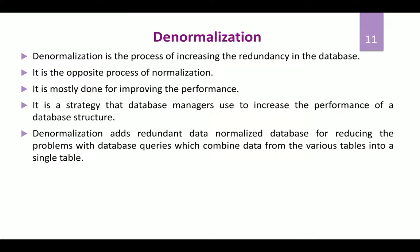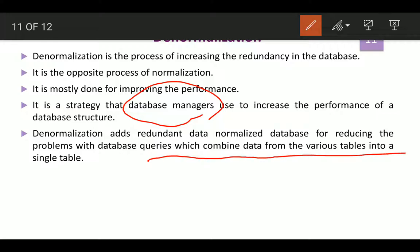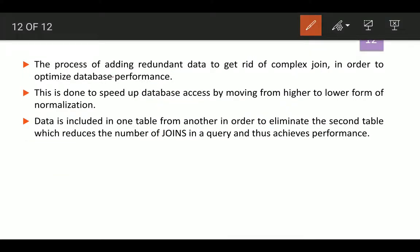The next topic is denormalization. It is the process of intentionally increasing redundancy in the database — the opposite of normalization. It is mostly done to improve performance. A database manager designs it so that database queries combining data from various tables can be answered using a single table. Unlike normalization which removes redundant data, denormalization adds redundant data to handle the join problem that occurs across multiple tables.